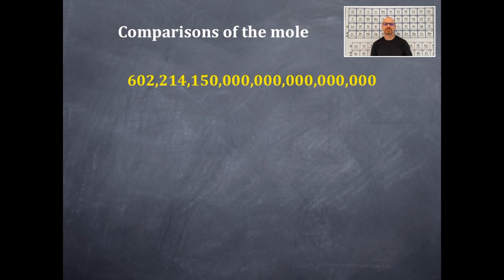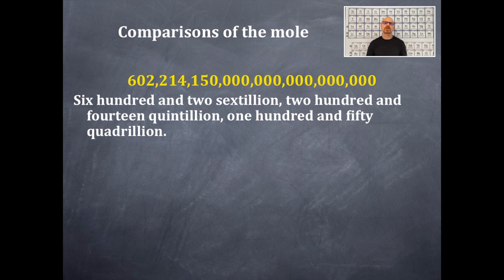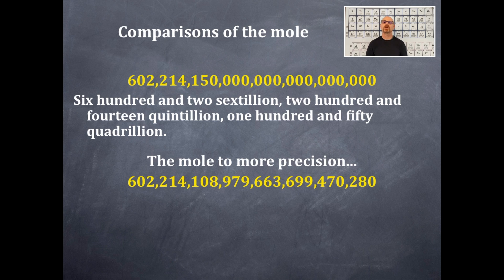Comparisons to the mole. This number is expanded out so that without exponential notation, you see all the zeros in it. This number is read as the following: 602 sextillion, 214 quintillion, 150 quadrillion. Wow. And here is the mole to more precision. You'll never be using it to this precision more than likely unless you're a scientist doing research.